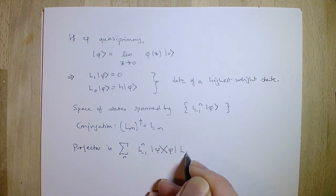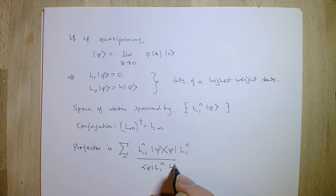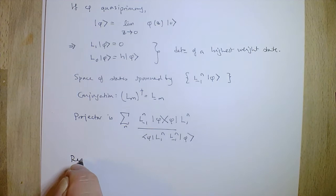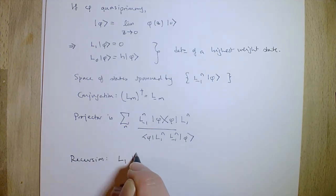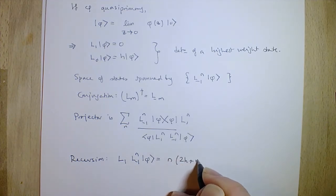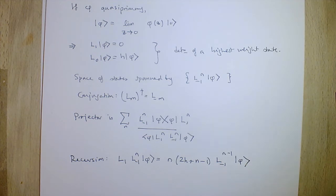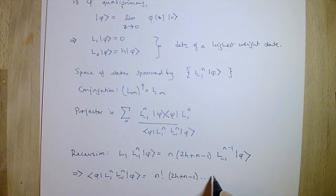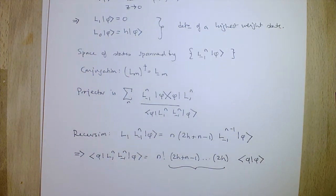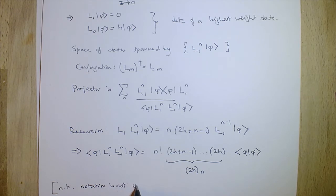We can work out the inner product recursively by acting with L_1 on L_{-1}^n — that inner product is n! times the rising Pochhammer symbol (2h)_n, i.e. the product (2h+n-1)(2h+n-2)...2h. There is notation disagreement, but here this is written as (2h)_n with Pochhammer notation. We also need three-point functions. Using the combination L_{-1} - L_0, which at z=1 acts as simply -h phi, we can compute these recursively.